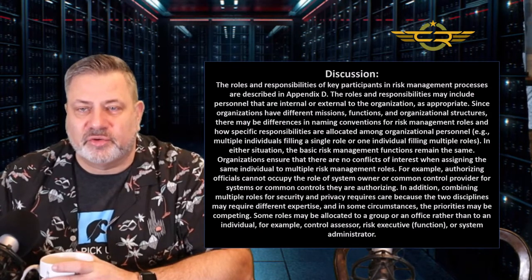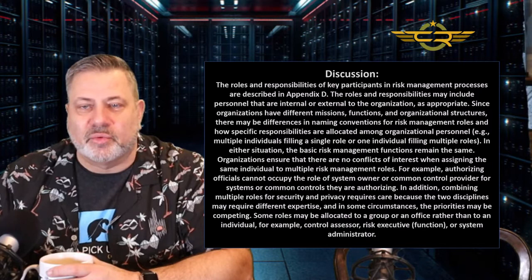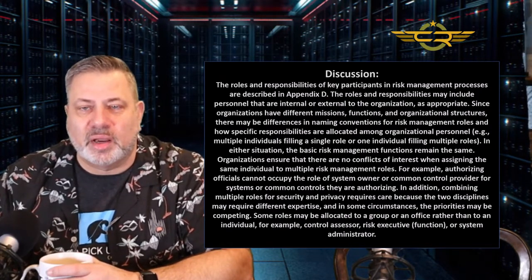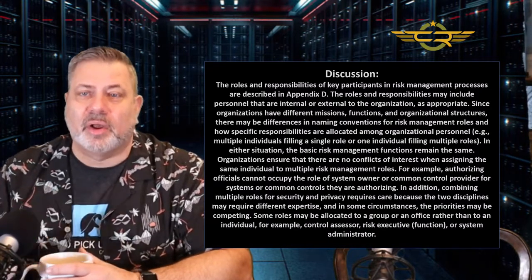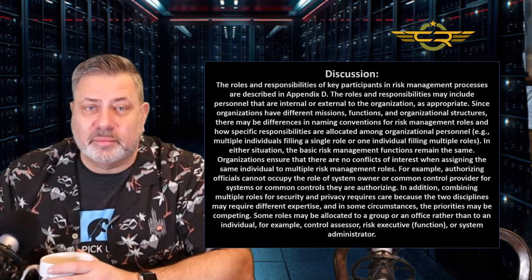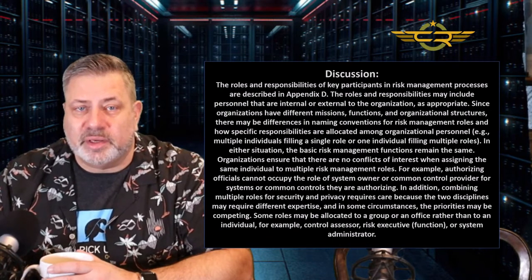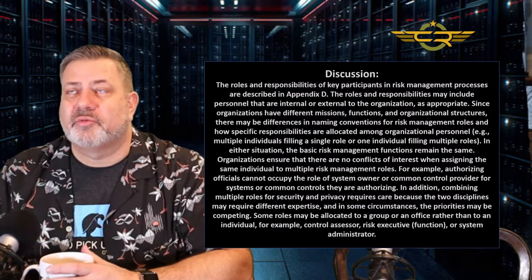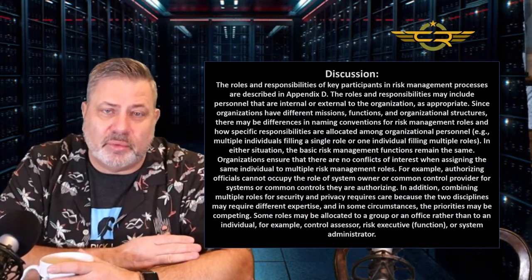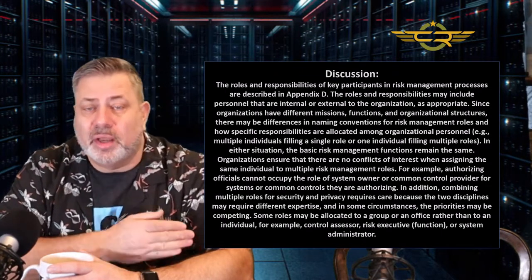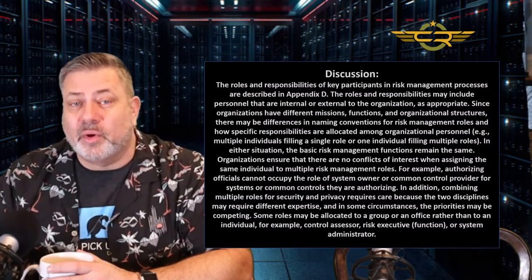Organizations must ensure there are no conflicts of interest when assigning the same individual to multiple risk management roles. For example, authorizing officials cannot occupy the role of system owner or common control provider for the systems they are authorizing. If someone is both the Authorizing Official and the system owner, they could authorize their own system and accept risk without implementing adequate controls. If you're on the information system side — as an ISSO, system owner, or common control owner — you really can't also be on the authorizing side as an AO or AODR.